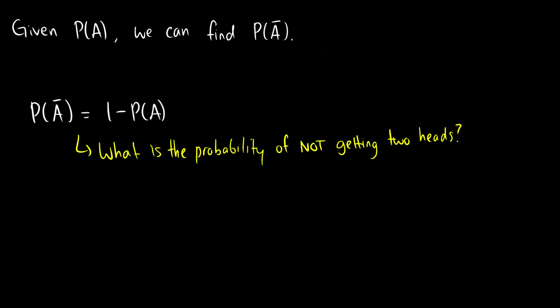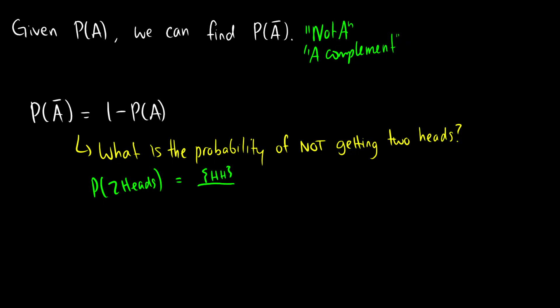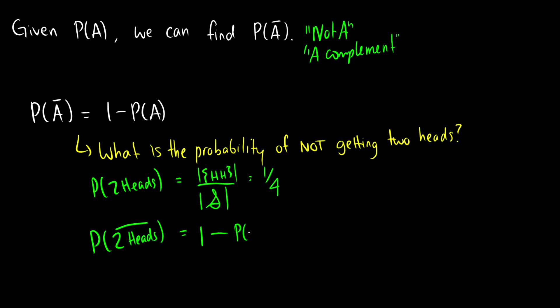There's something more we can do with this. If we have the probability of A, we can find the probability of not A, or the complement. The complement is everything that is not in that set, and it equals one minus the probability of A. We'll prove this in the next video. So what is the probability of not getting two heads? The probability of two heads is one fourth, so the probability of not getting two heads is one minus one fourth, which equals three fourths.